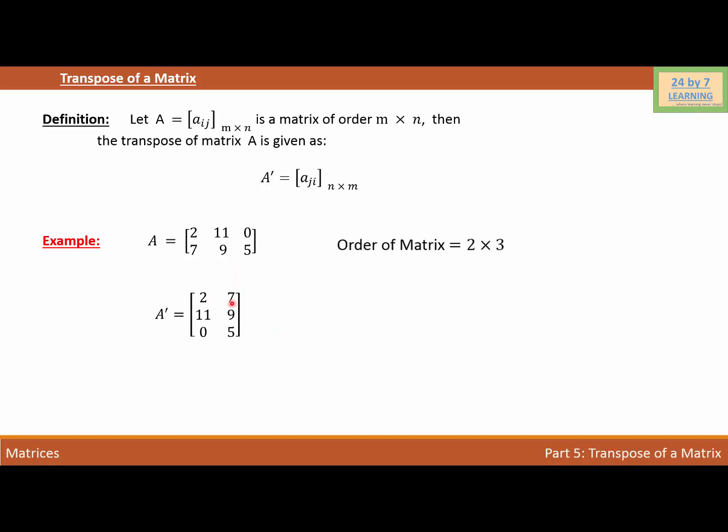So we have 3 rows and 2 columns. So the order of this matrix is 3 by 2.